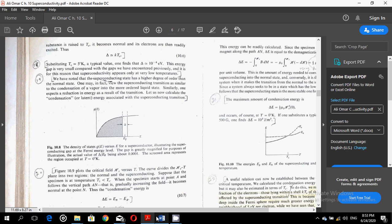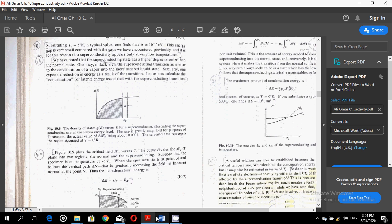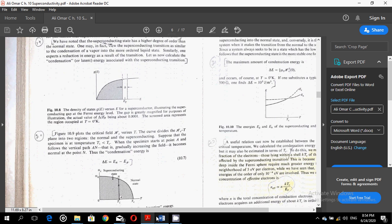We have noted that the superconducting state has a higher degree of order than the normal state. One may in fact view the superconducting transition as similar to the condensation of a vapor into the more ordered liquid state. Similarly, one expects a reduction in energy as a result of the transition. Let us now calculate the condensation or latent energy associated with the superconducting transitions.